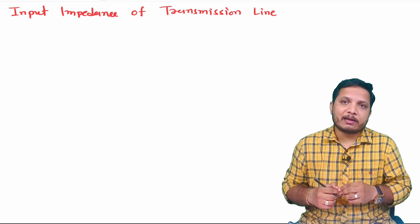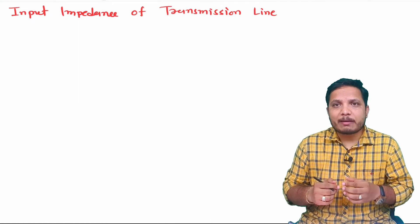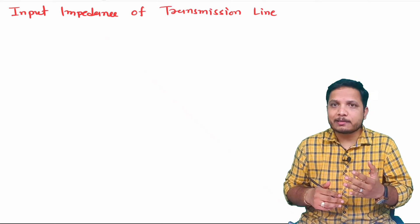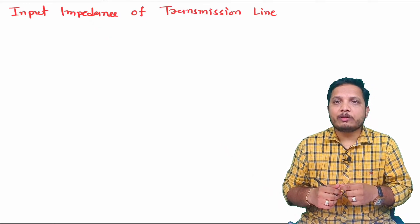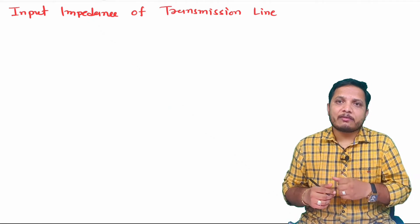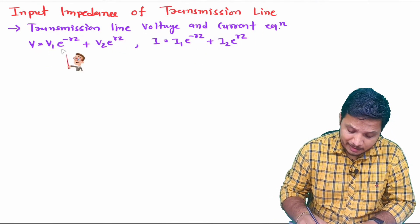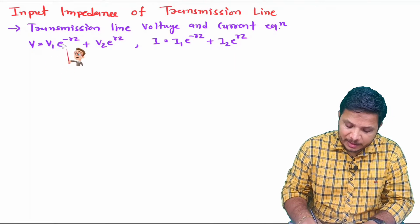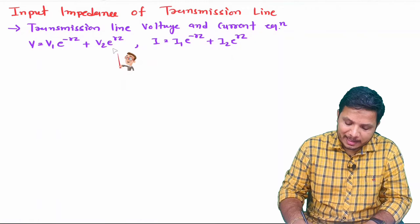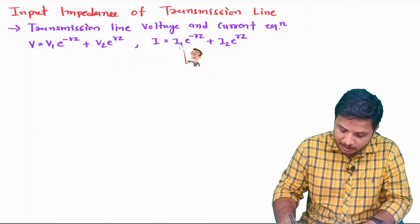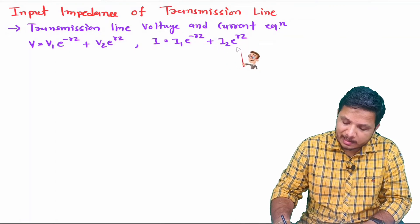As we have seen, the voltage and current equations of a transmission line are: V equals V1 times e to the power minus gamma z, plus V2 times e to the power plus gamma z; and the current equation I equals I1 times e to the power minus gamma z, plus I2 times e to the power plus gamma z. The term V1·e^(−γz) is the incident voltage, V2·e^(+γz) is the reflected voltage, I1·e^(−γz) is the incident current, and I2·e^(+γz) is the reflected current.